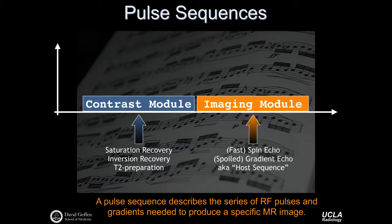The imaging module could use spin echoes or fast spin echoes, gradient echoes, or spoiled gradient echoes. We sometimes call this the host sequence. While these are shown here as being completely independent and distinct, MR imaging can be more complicated, and the contrast and imaging modules may be closely intertwined.